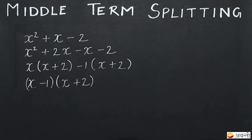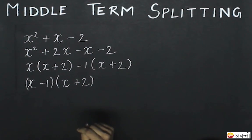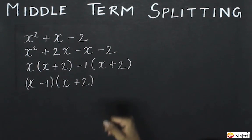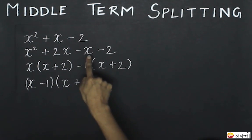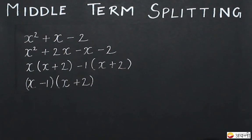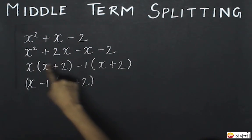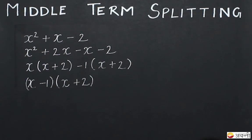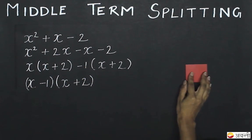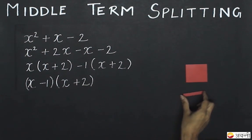Here I have another expression where there is a negative term. After middle term splitting, we get x squared plus 2x minus x minus 2. We can see there are two negative terms and two positive terms. I will first represent the two positive terms: for x squared I will use this square again, and for 2x I will take two such strips.